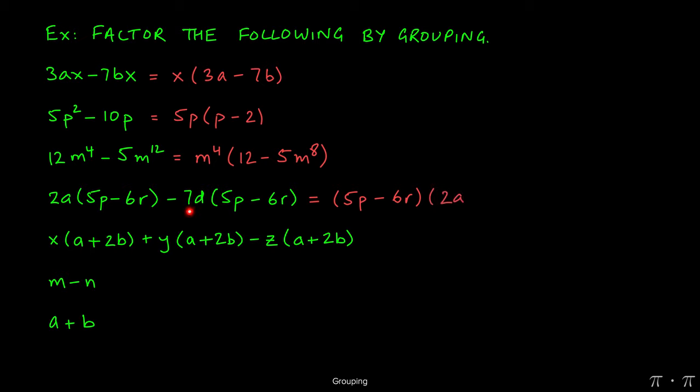Then when I divide 7d times 5p minus 6r by 5p minus 6r, the two terms will cancel, leaving behind negative 7d. Because there are only two terms and no additional terms to factor the GCF out of, the problem is over. We can close the parentheses.